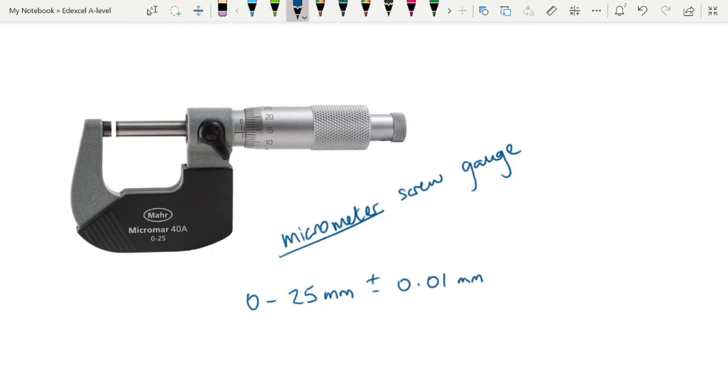So this is two hundredth of a millimeter. And therefore, the uncertainty with this would be 0.005 millimeters.